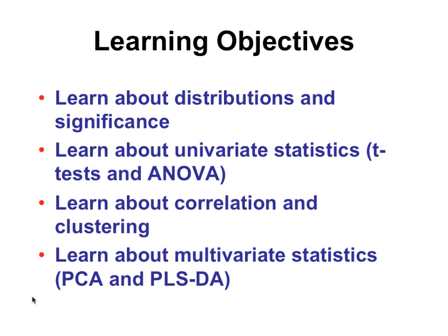The critical thing with statistics is learning about distributions and measures of significance. Then we're going to move to what are standardly called univariate, single variable count statistics. We'll also talk about correlation, which is tied to that, and clustering. And then we'll move to multivariate statistics, which is what people traditionally use a lot of in metabolomics. All of these — univariate, correlational analysis, clustering, and multivariate — are all part of the same thing.